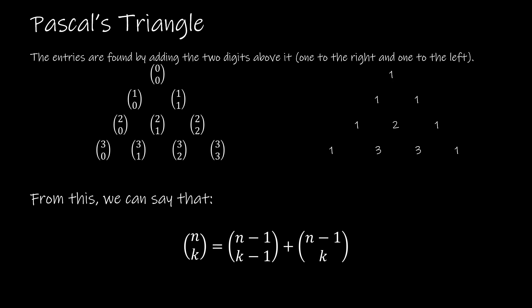So I wouldn't have to actually compute C(4,0), C(4,1), C(4,2), C(4,3), and C(4,4). I could just say: 0+1=1, 1+3=4, 3+3=6, 3+1=4, and 1+0=1. Now I have the whole next row without doing any additional work except some quick mental math.